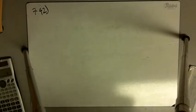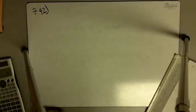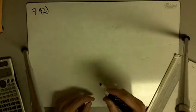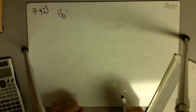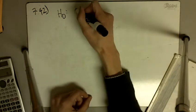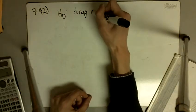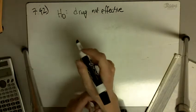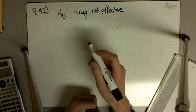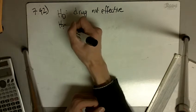Problem 142 says suppose a new drug is being considered for approval by the Food and Drug Administration. The null hypothesis is that the drug is not effective. The alternative hypothesis is that the drug is effective.